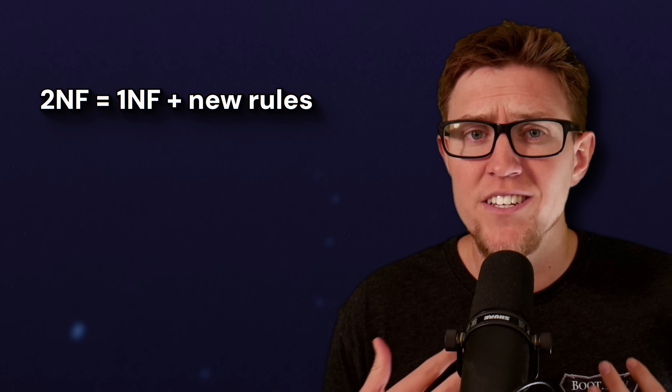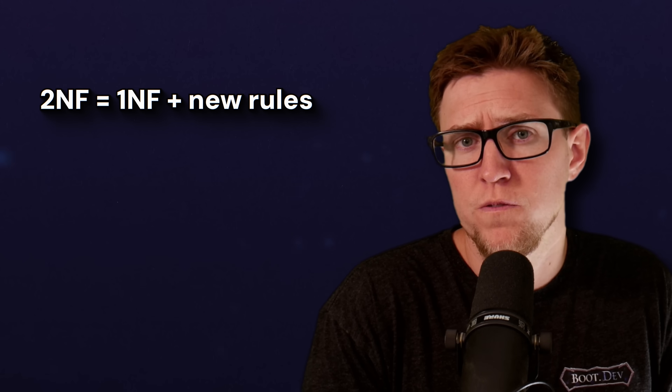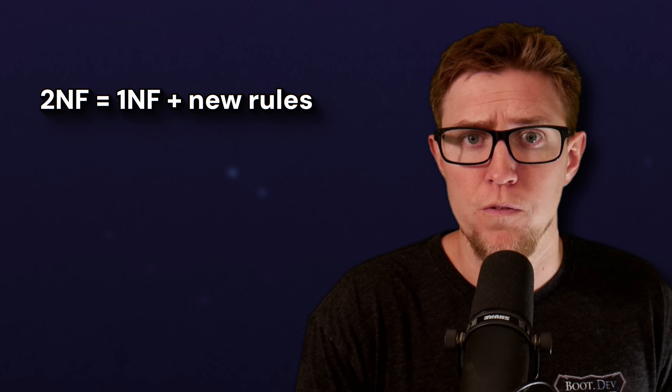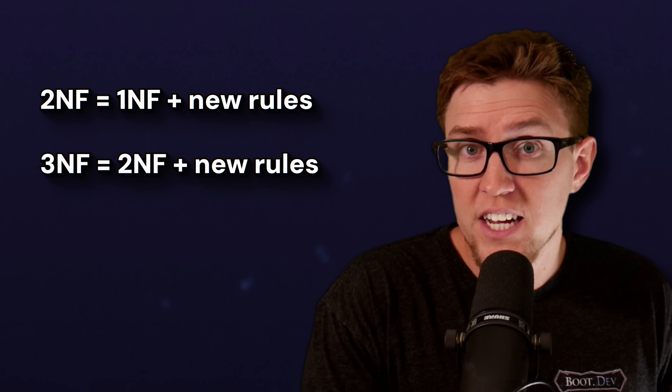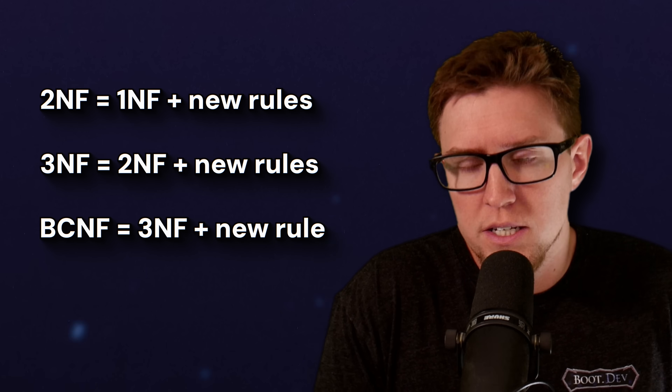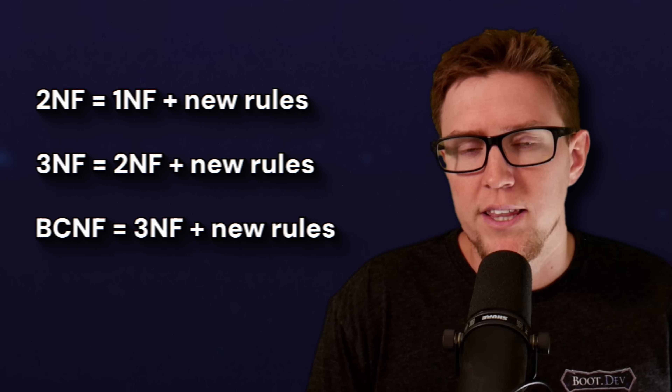Each form is just a set of rules. If the data in the database follows the rules, then the database is in that normal form. The rules build on each other, so second normal form has all the rules from first normal form plus some extra. Third normal form has the rules of second normal form plus some extra.